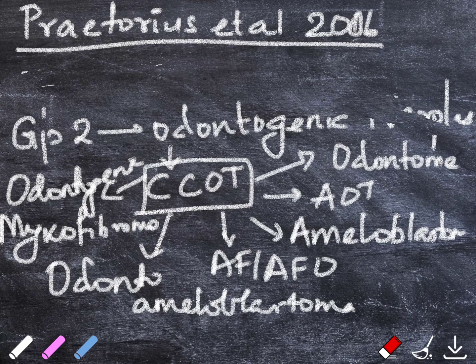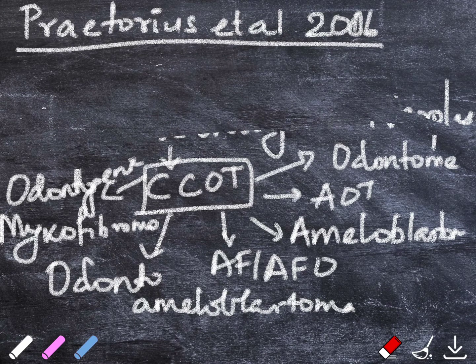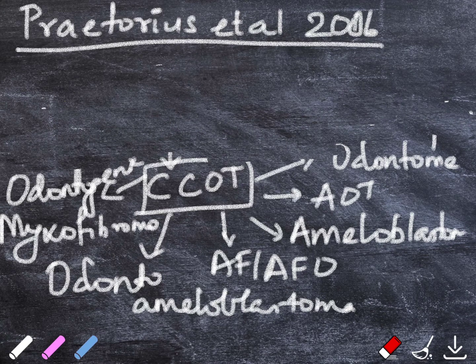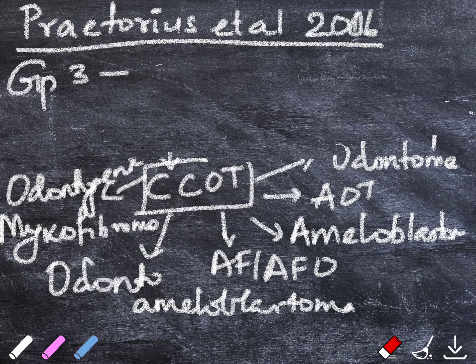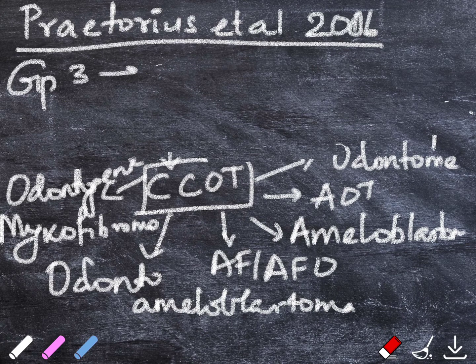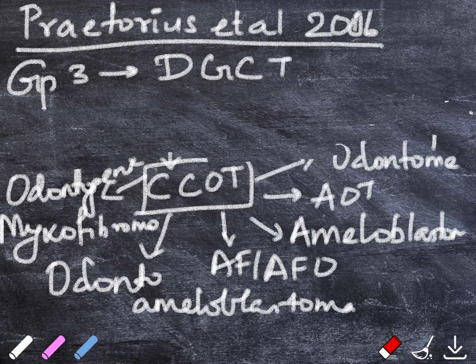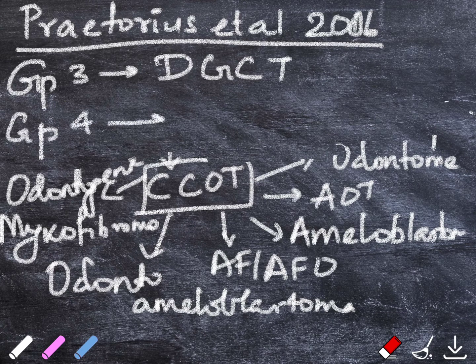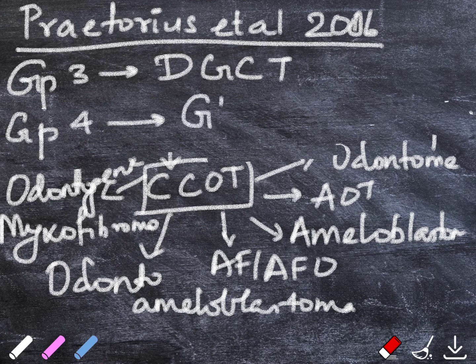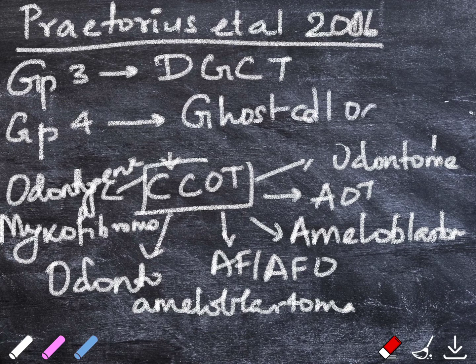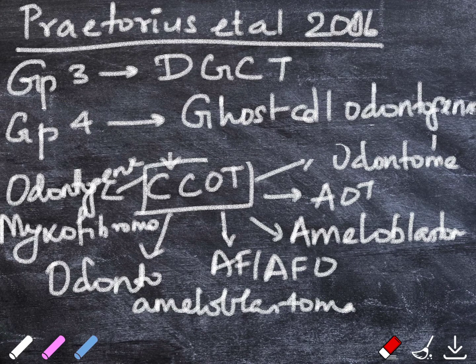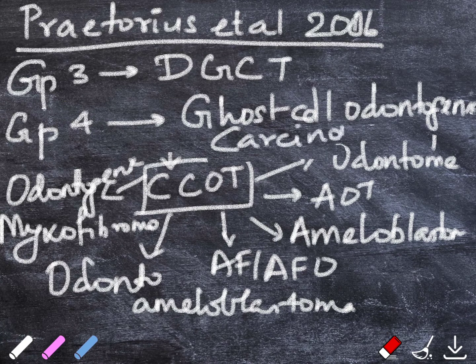Group 3 comprised of those solid benign odontogenic neoplasms which had similar cell morphology as that of a COC with dentine formation, that is dentinogenic ghost cell tumor. And type 4 was a malignant neoplasm which resembled the dentinogenic ghost cell tumor, which is the ghost cell odontogenic carcinoma.